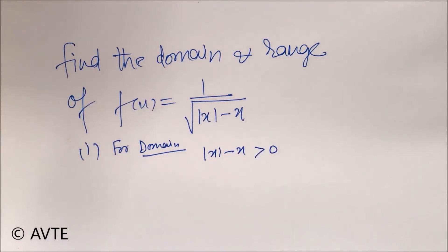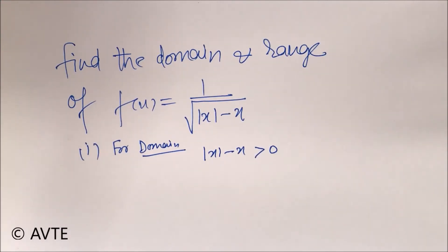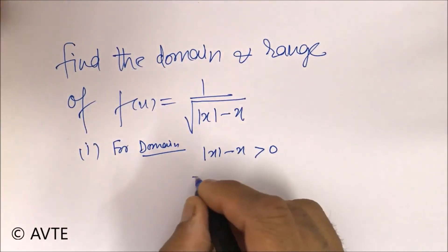Had it been a square root in the numerator, it could be greater than or equal to 0. But since the square root is in the denominator, it cannot be negative because it's a square root, and it cannot be 0 because it's in the denominator.